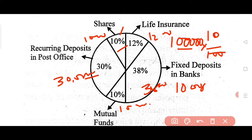He invests in the post office and saves via recurring deposit (RD). RD is savings, not investment. Life insurance (LIC) is also savings. Fixed deposit is an investment. Mutual funds are also investments. All of you will learn these distinctions.